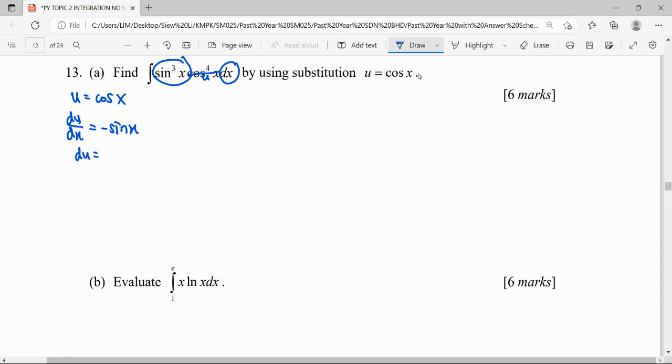Sin³x here we can separate it. It becomes sin²x times sin x, then with dx. So one of the sin x dx here can be represented by negative du, so it can be substituted in term of u.